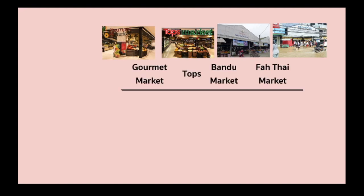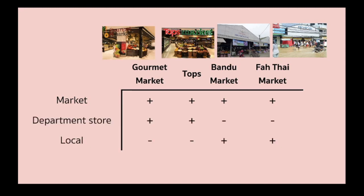Another example: Gourmet Market, TOPS, Banu Market, and Talat Market. If we analyze the semantic features of these words, the shared feature is 'market.' But we can also differentiate them further using the features 'department store' and 'local.' Gourmet Market and TOPS are normally located in department stores, so we mark them with plus for that feature. But Banu and Talat are local markets, so we mark them with plus under the 'local' feature.